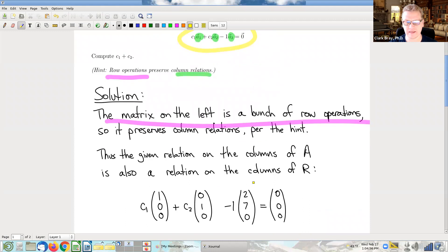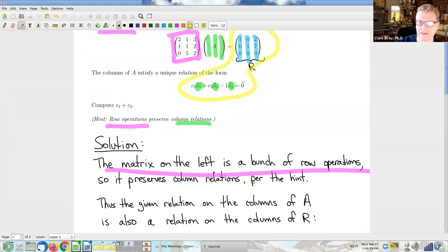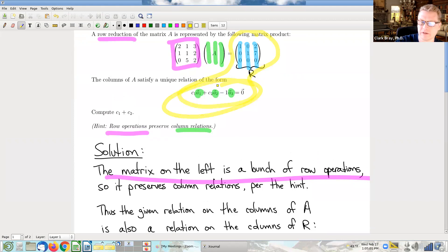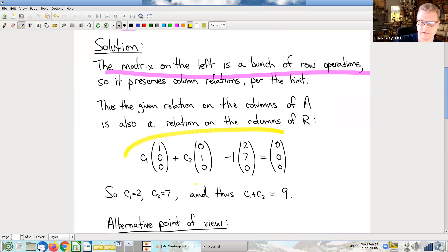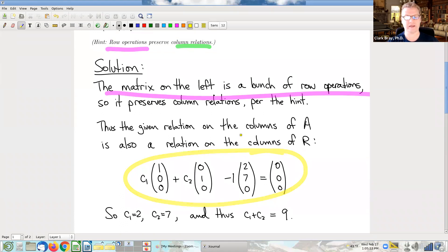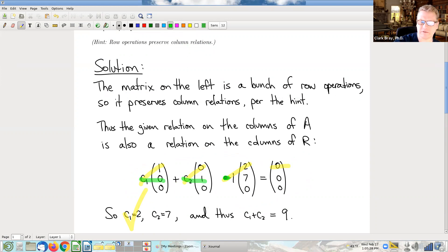Okay. So, yeah, writing that down then and applying it, applying this relation to the columns of the known reduced row echelon form matrix. We get this equation right here. And, of course, at that point, it's just a little bit of arithmetic. You can look in particular at the first entries in all of these vectors. And that instantly tells you C1 is equal to 2. And, likewise, you look at the second entries in all of these vectors. And that tells you C2 is equal to 7. So nothing to it.